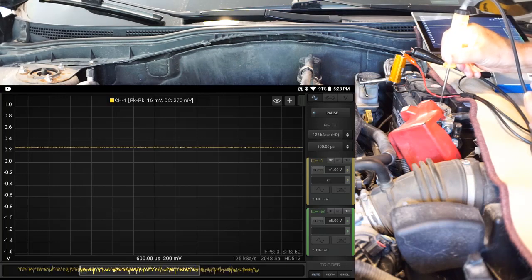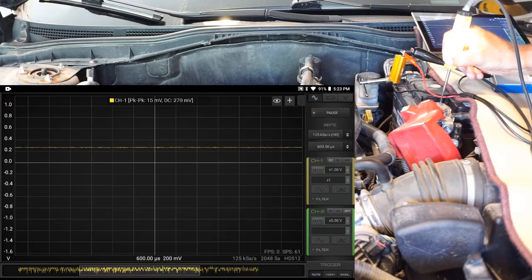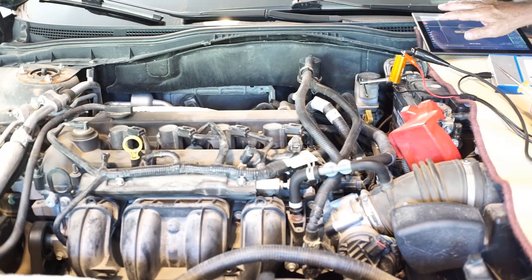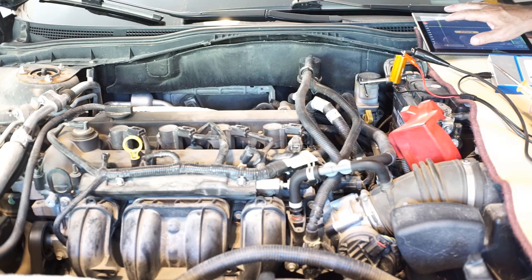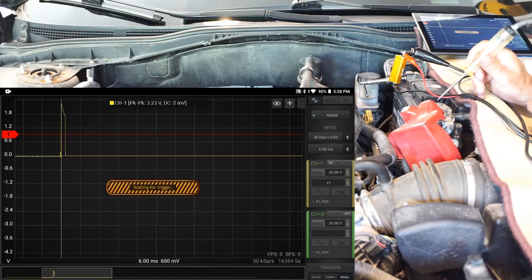We're getting 270 millivolts which means the circuit is carrying 270 milliamps. I've set a trigger and I've got the scope in single trigger mode. Let's see if we can capture the instant that the light makes contact.